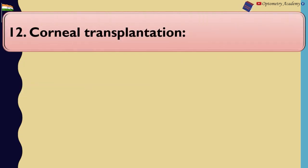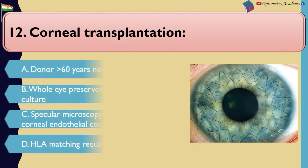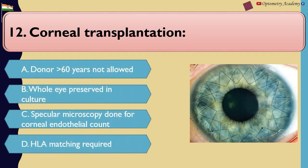Corneal transplantation: A. Donor more than 60 years is not allowed. B. Whole eye preserved in culture. C. Specular microscopy done for corneal endothelial count. D. HLA matching required.